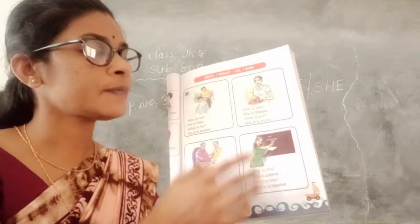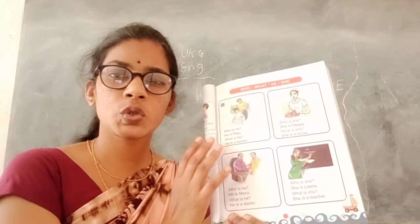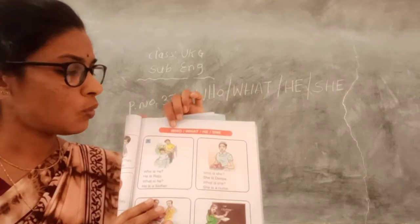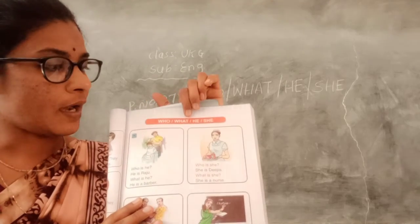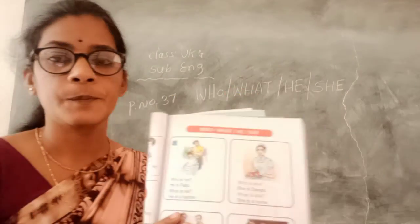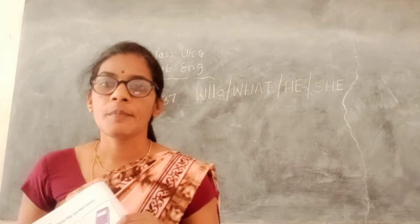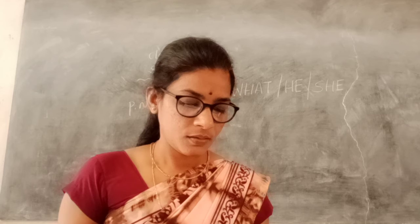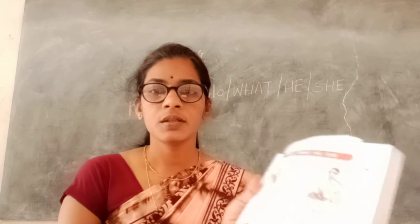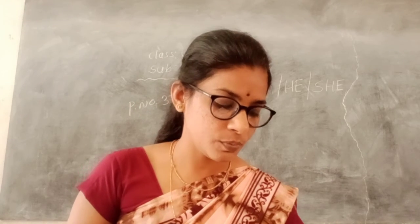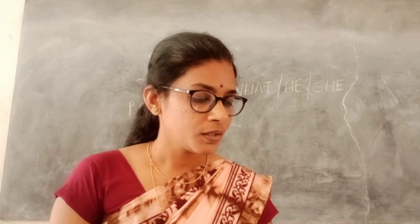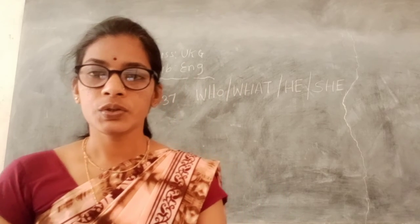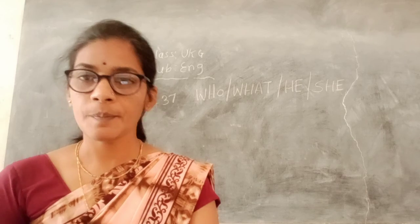Same children, you must and should first read it, and then write out the spellings of who, what, he and she. Now children, read your textbook at home. Next class I will listen to you once again children. Now today's class is completed. Thank you.